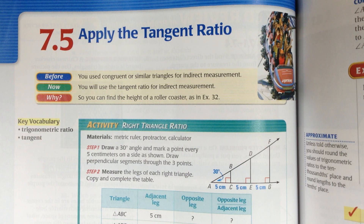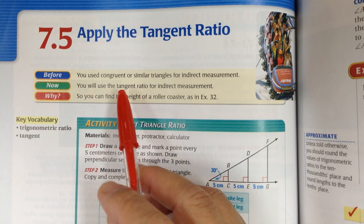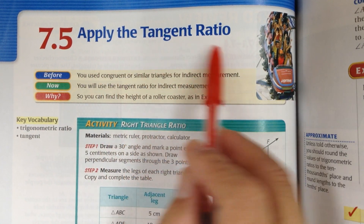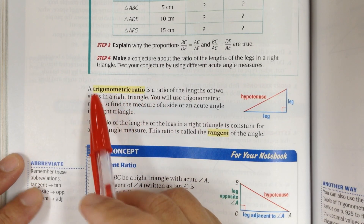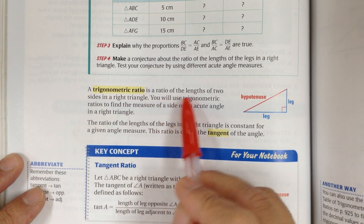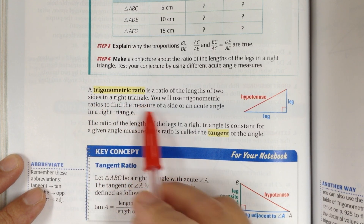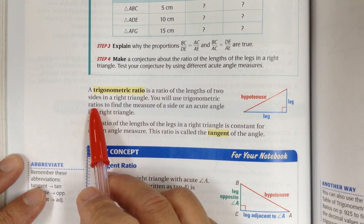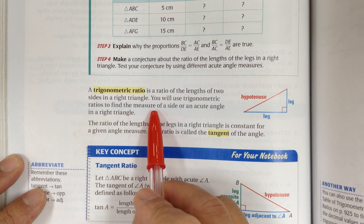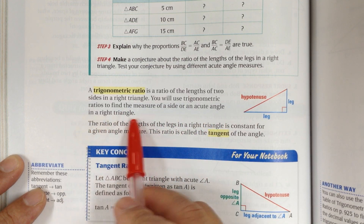Let's go to page 466. This is lesson 7.5, to apply the tangent ratio. A trigonometric ratio is a ratio of the length of two sides in a right triangle. You will use trigonometric ratios to find the measure of a side or an acute angle in a right triangle.